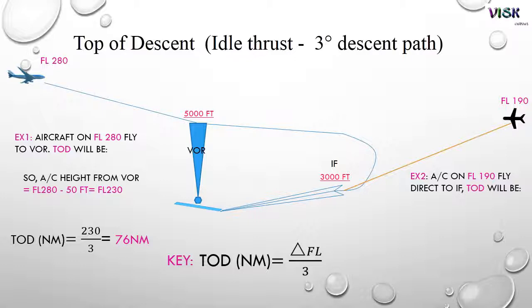Follow example number 1, top of descent should be 76 nautical miles descending to 5000 feet.